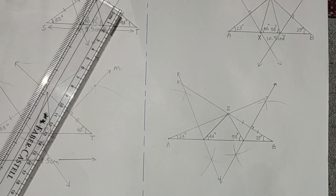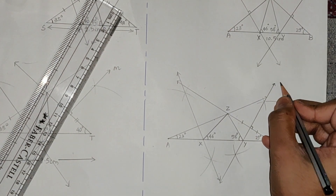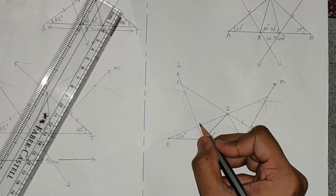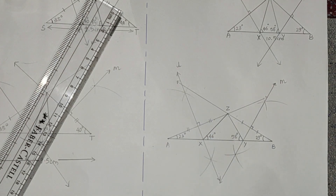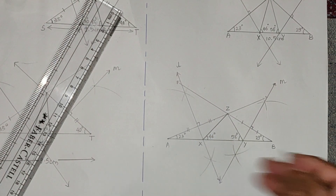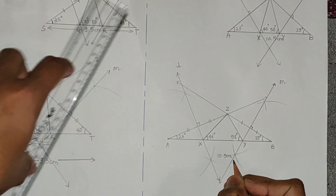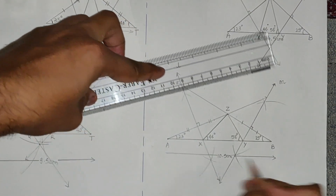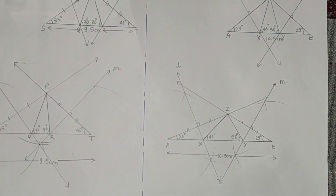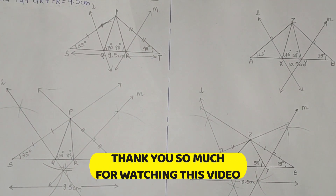After getting the two perpendicular bisectors, join the intersection vertices — this gives angle X as 46° and angle Y as 58°. We name the vertices X and Y, and write 10.5 cm on the base. You can verify using the protractor. The second question is also complete. I hope you have understood. If you have any doubts, let me know in the comments. Thank you for watching.